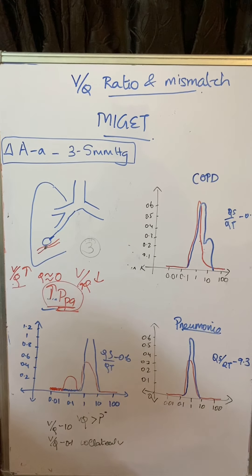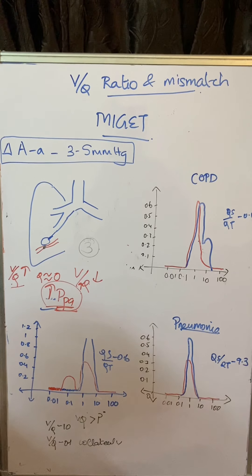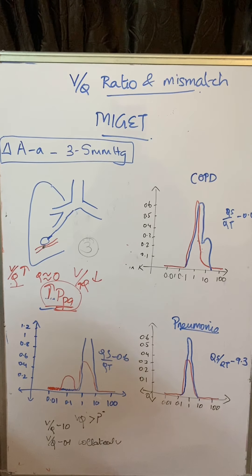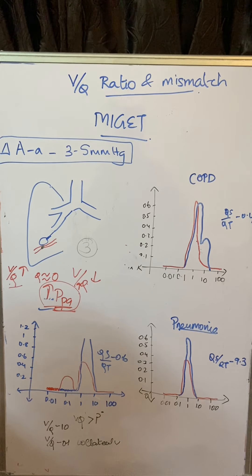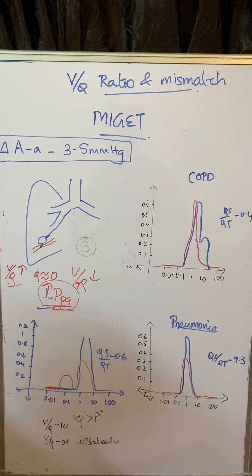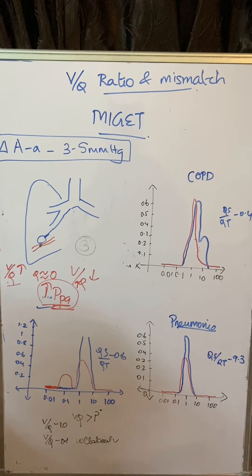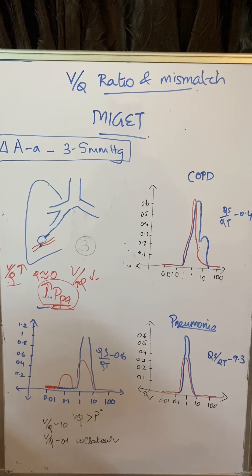In this video we have discussed important graphs regarding ventilation perfusion using the MIGET technique, pulmonary embolism, and how there is inequality in alveolar-arterial oxygen distribution in the normal lung — a difference in PO2 and PCO2 in different segments of the lung. The summary is that the base of the lung is more hypoxic and hypercapnic compared to the apex of the lung. We will discuss more about respiratory physiology in our next videos. Thank you.